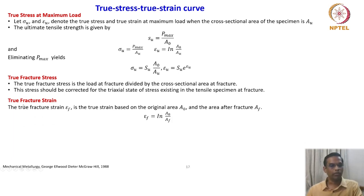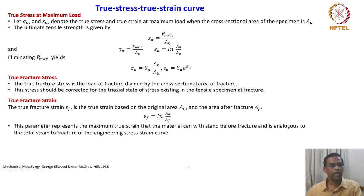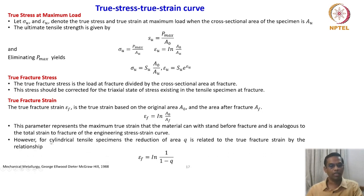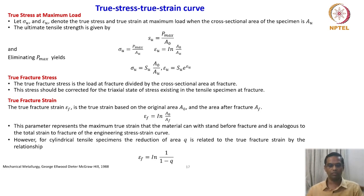True fracture strain, given by epsilon_f, is the true strain at fracture: epsilon_f = ln(A_0/A_f). This parameter represents the maximum true strain the material can withstand before fracture, and it is analogous to the total strain to fracture in the engineering stress-strain curve. For a cylindrical tensile specimen, the reduction of area Q is related to the true fracture strain by: epsilon_f = ln(1 / (1 - Q)).